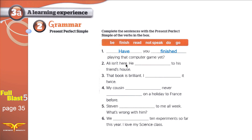Ali isn't there — he has gone to his friend's house. We use 'has' because Ali equals 'he.' So: 'He has gone to his friend's house. He has gone — he is not here, he hasn't returned yet. He has gone to his friend's house.'